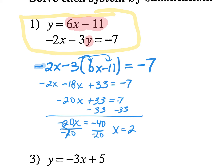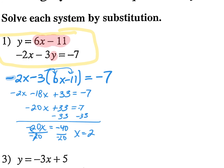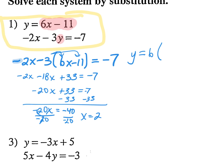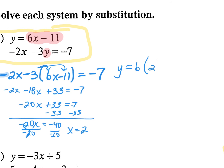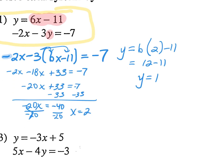Which equation would be easier? The top one. So I'm going to say y equals 6 times 2 minus 11. 6 times 2 is 12 minus 11, so y equals 1. As an ordered pair, that's what I need to see: your ordered pair is 2 comma 1. This is my x value, this is my y.